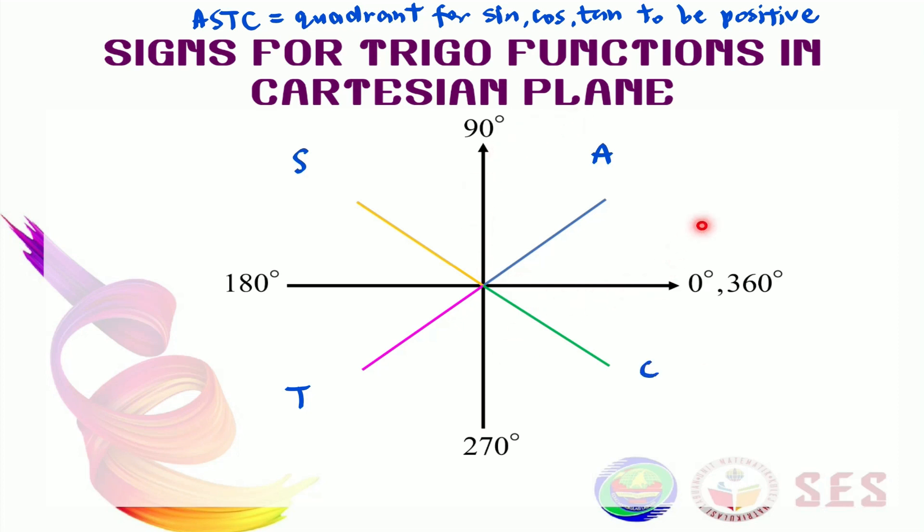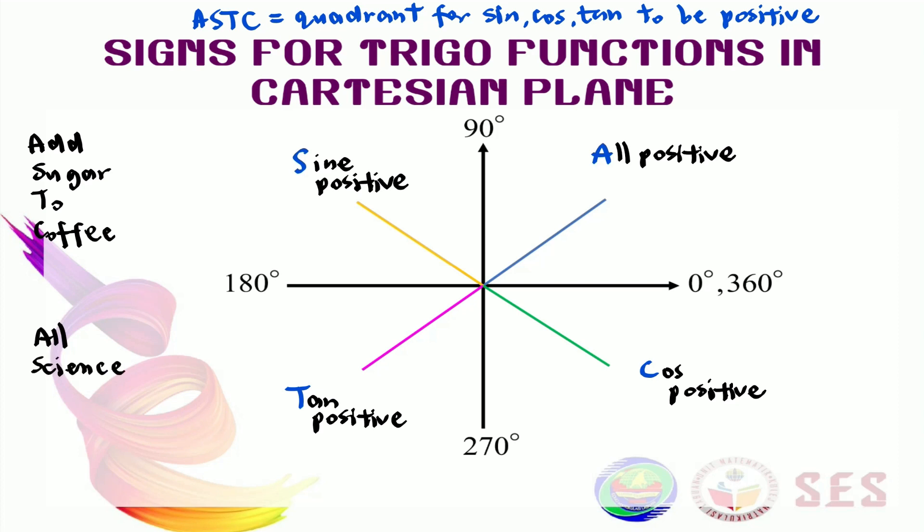This means in the first quadrant here, all basic functions are positive. In the second quadrant, only sine is positive. In the third quadrant, only tan is positive. And in the fourth quadrant, only cos is positive. There are many ways to remember this from your high school. Add sugar to caffeine. All science teachers are crazy. No offense to all science teachers out there, you guys are crazy awesome. But for me, ASTC will do. It's up to you how to memorize this.